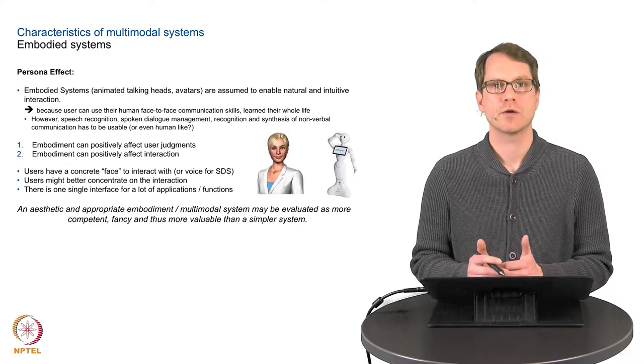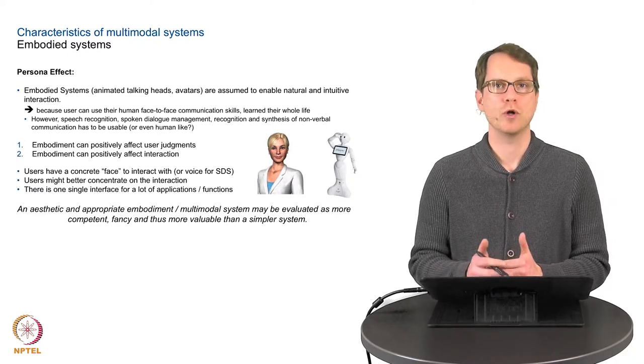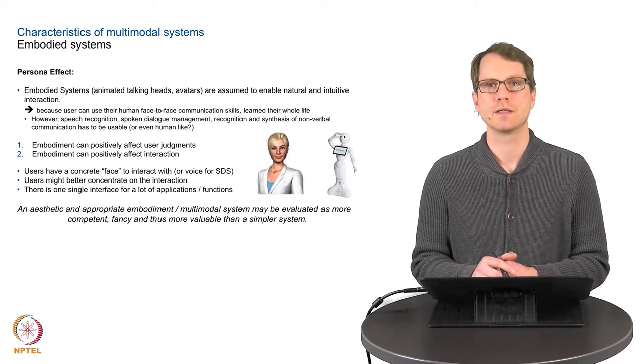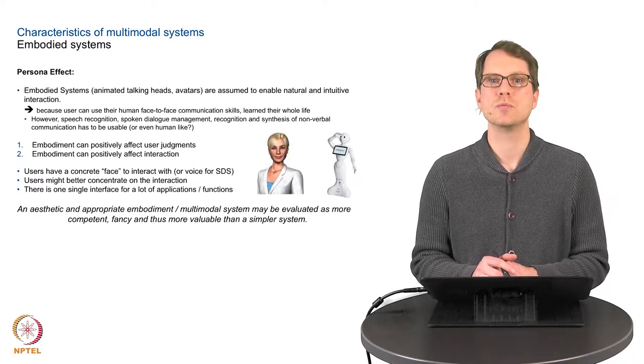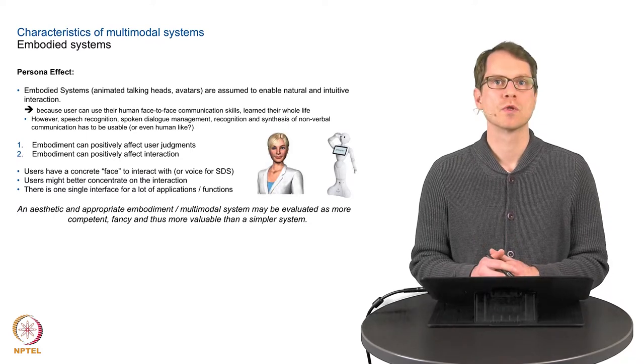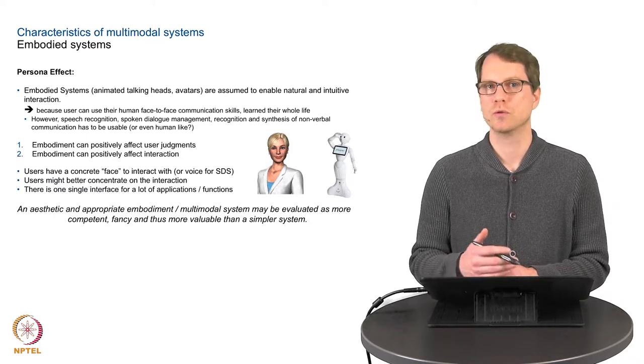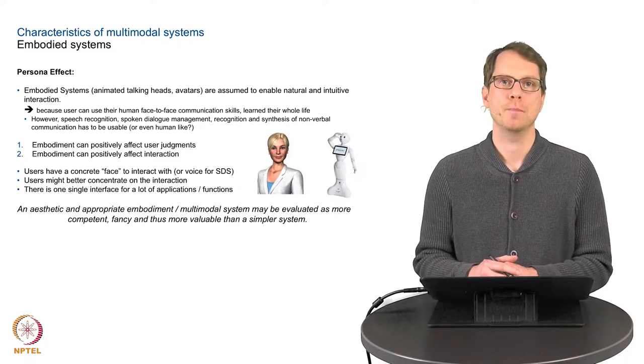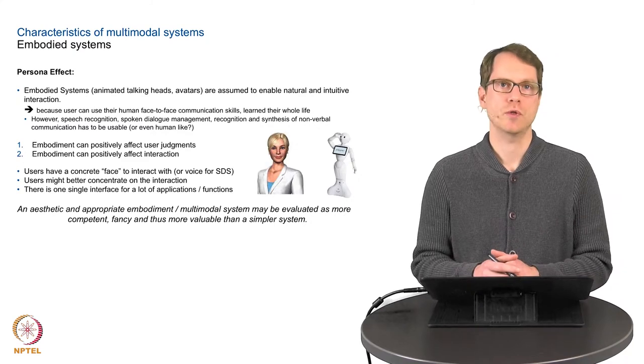The next four characteristics hold only for embodied systems. With embodied systems I am talking about human-like system interfaces. This could be either real robots, social robots which look like a human or nearly like a human, or virtual humans on the screen.